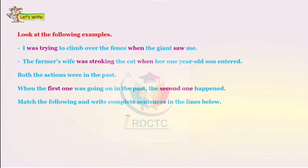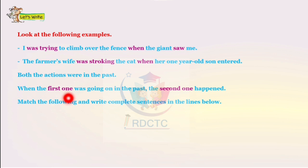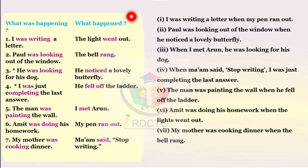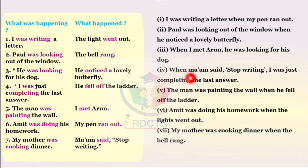Now we see the next topic, 'Let's Write.' Look at the following examples: 'I was trying to climb over the fence when the giant saw me.' 'The farmer's wife was stroking the cat when her one-year-old son entered.' Both the actions were in the past — when the first one was going on, the second one happened. Match the following and write complete sentences. I was writing a letter when my pen ran out. Paul was looking out of the window when he noticed a lovely butterfly. When I met Arun, he was looking for his dog. When ma'am said stop writing, I was just completing the last answer. The man was painting the wall when he fell off the ladder. Amit was doing his homework when the lights went out.